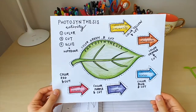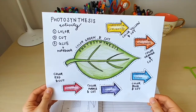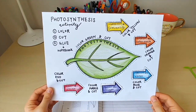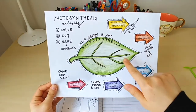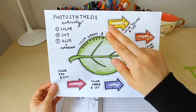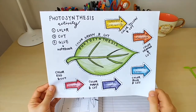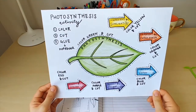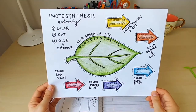Now that you have finished coloring the photosynthesis activity page, you are going to cut along the lines to cut out the leaf as well as the ingredients and the products of photosynthesis. I'll meet you back here once you've finished cutting out your pieces.